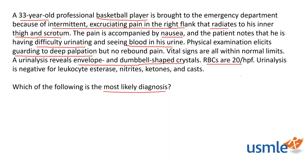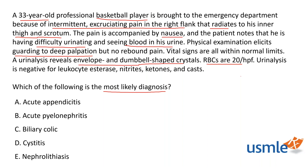Moving to step six: uncover those answer choices. Now step seven — evaluate each answer choice from the last up. For E we have nephrolithiasis, D is cystitis, C is biliary colic, B is acute pyelonephritis, and A is acute appendicitis. Which ones do you think are correct or incorrect, and why?